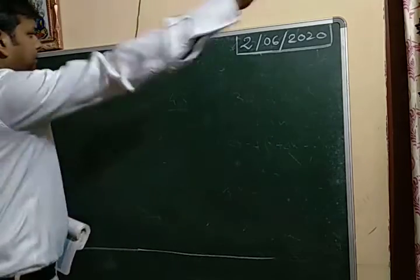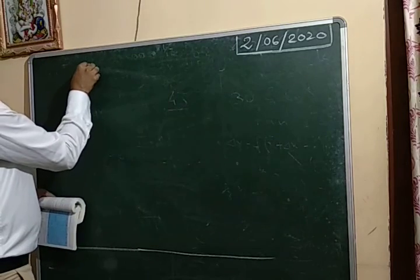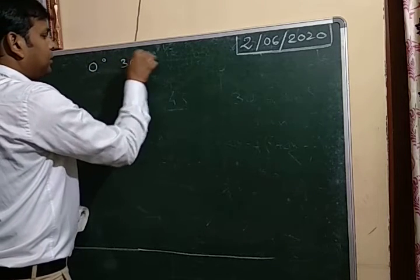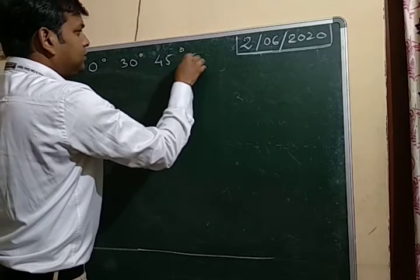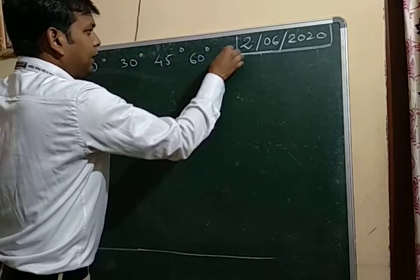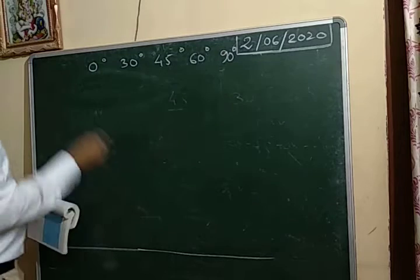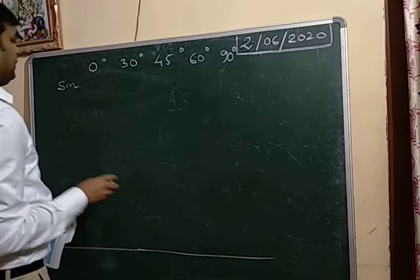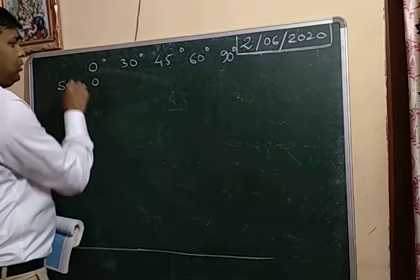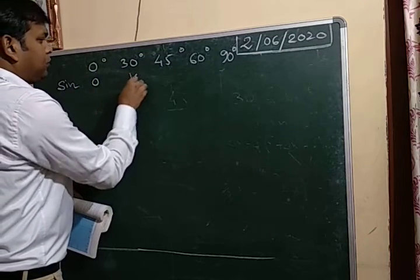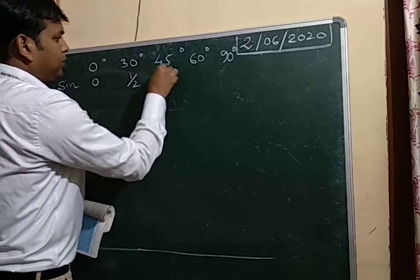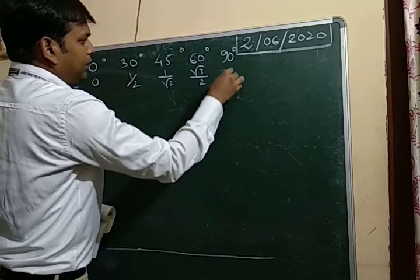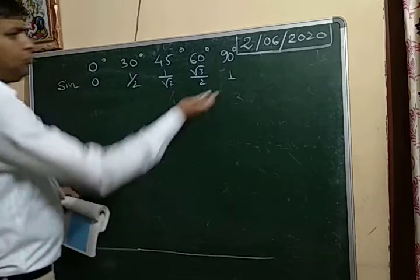So the table I have given has angles: 0 degree, 30, 45, 60, and 90 degree. The first row is the value for the sine trigonometric ratio. Sine 0 degree is 0. Sine 30 degree is 1 by 2. Sine 45 is 1 by root 2. Sine 60 degree is root 3 by 2. And sine 90 degree is 1. So how to remember this first line?